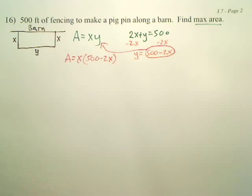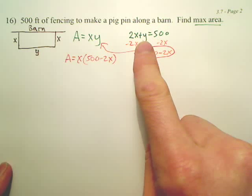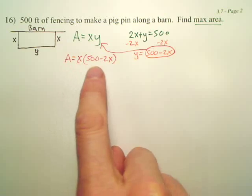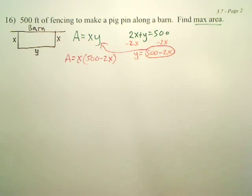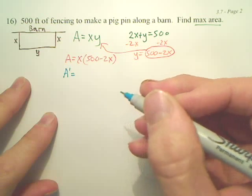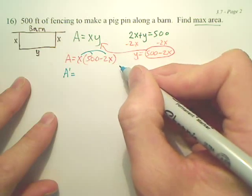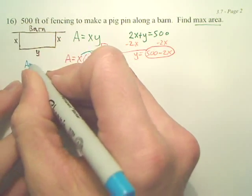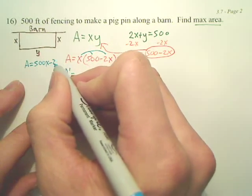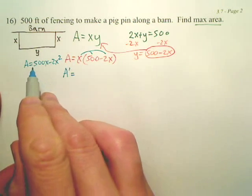This equation relates to the information here. This is your secondary. This is your primary. I want to derive this to maximize. Before we do that, let's distribute this. What do you get? Doesn't it become 500x minus 2x squared? We okay with that?